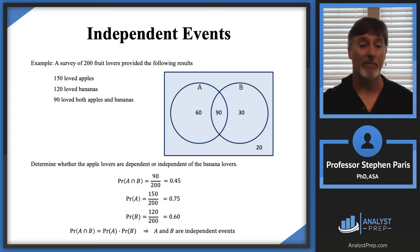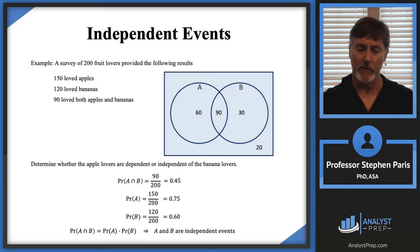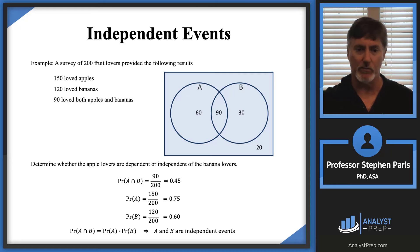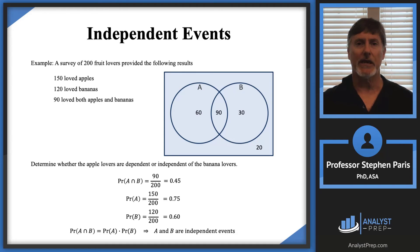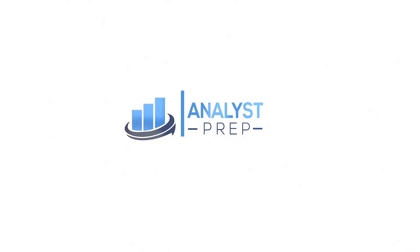A and B are independent of one another since I got an equality. If the probability of A intersect B had not been equal to the probability of A times the probability of B, I would have said that A and B are dependent events. But since they were equal, A and B are independent events. We'll do another example in the next video — I'll see you then.